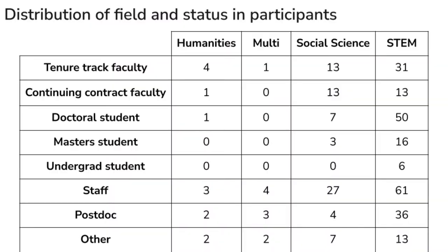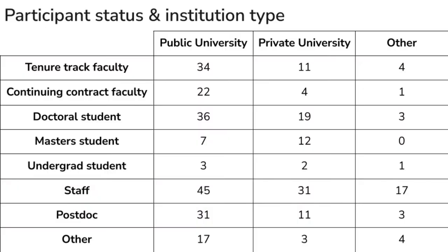Of those who answered, there were 140 staff members overall, 45 postdocs, 81 students, and 76 faculty members. Many were in social sciences and STEM. 269 respondents said they had been in their current position for one to seven years, with the majority in the first three years. Overwhelmingly, our participants came from public universities, with 195 of those participants at public institutions.